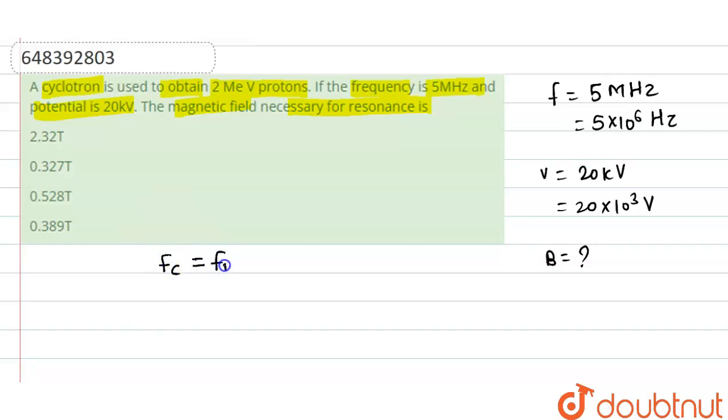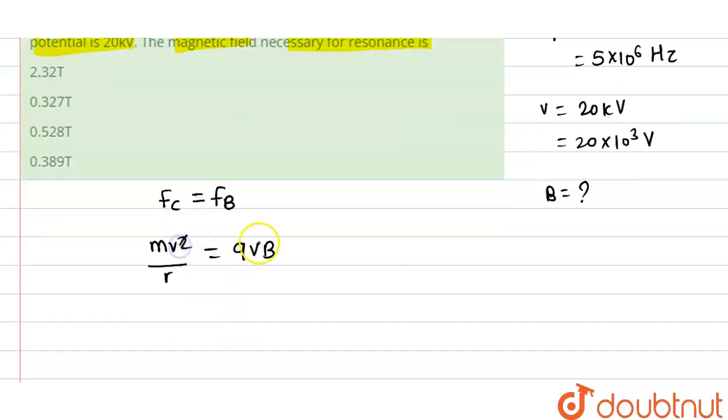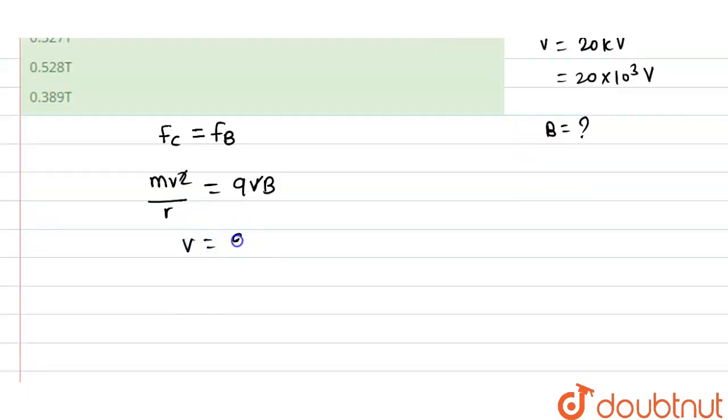So here the equation will be mv²/r = qvB. Now v will get cancelled and v will be equal to qBr/m. This is the velocity of that proton.